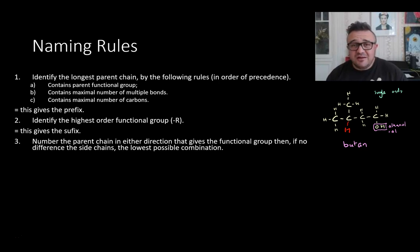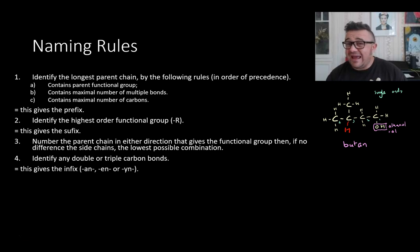We number the parent chain, and we number it so that the functional group has the lowest possible number. So it's either left to right, right to left. In this case, we go one, two, three, four, to give our functional group the number one. We identify any triple or double bonds. There's none. That gives us the infix. In this case, it's going to be an an, a-n, because there are no double bonds. So single bonds here equals an an.